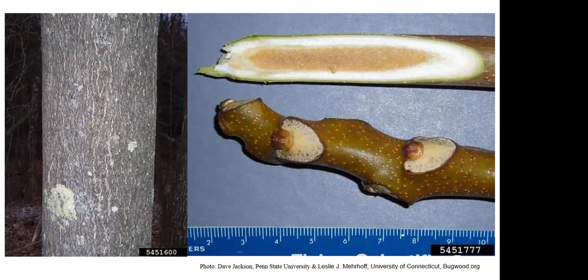The twigs on Tree of Heaven are very stout, to hold those especially large compound leaves in place. The twigs have a tendency to be tan or even an olive color, with very distinctive heart-shaped to V-shaped leaf scars that are quite large. There's a rounded, dome-shaped bud surrounded on the bottom by those leaf scars. If we slice the twigs open, we'll see a very prominent, large tan pith with white wood. Anytime you bruise or cut the stems or the leaves, you're going to notice that really disagreeable odor.